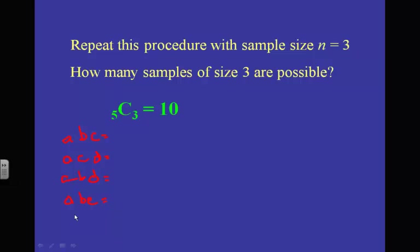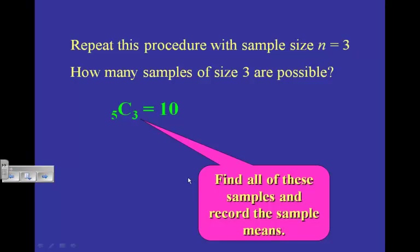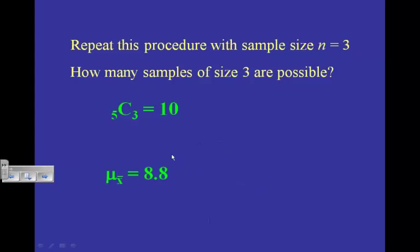I would add all those averages together and divide by 10 to find the mean of all those samples. Then I could calculate the standard deviation. The result: μ sub x-bar is 8.8, and the standard deviation of x-bar is 1.66.